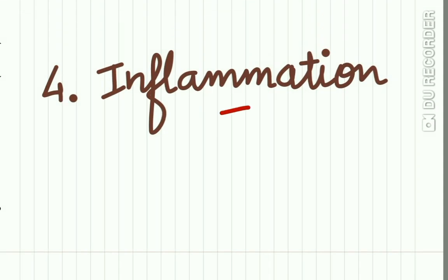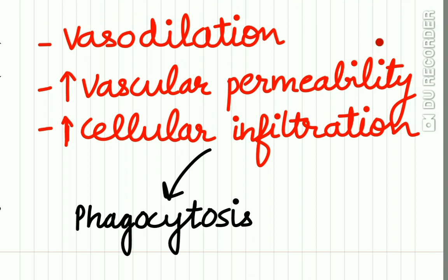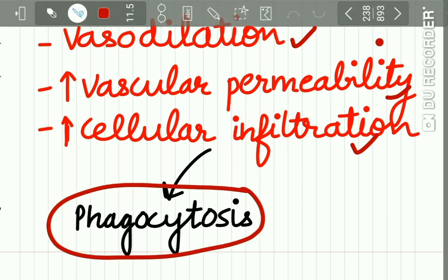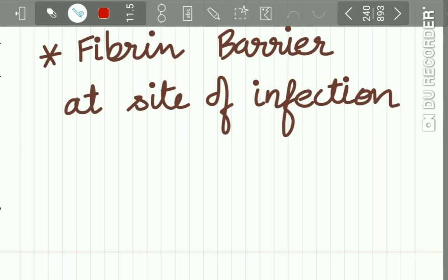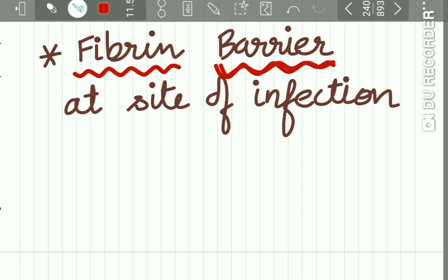The fourth mechanism of innate immunity is inflammation. In inflammation, there is vasodilation, increased vascular permeability, and increased cellular infiltration. This increased cellular infiltration causes phagocytosis. Increased vascular permeability at the site of inflammation causes outpouring of plasma, which dilutes toxic products. At the site of inflammation, there is also fibrin barrier formation, which acts in innate immunity.